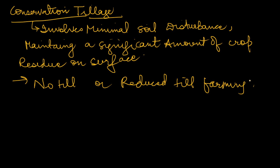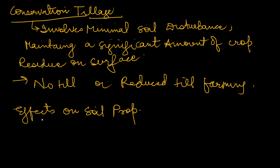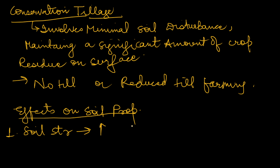Now we will see the effects of conservation tillage on soil properties. We have to discuss two things: effects on soil properties and effects on greenhouse gas emissions. First, regarding soil structure — conservation tillage enhances soil aggregation and porosity because there is no disturbance of soil.